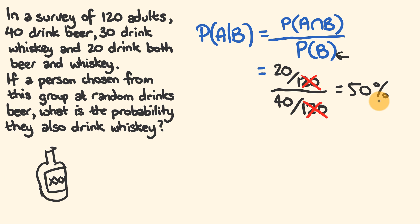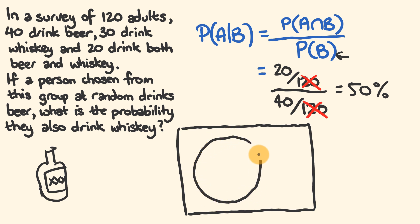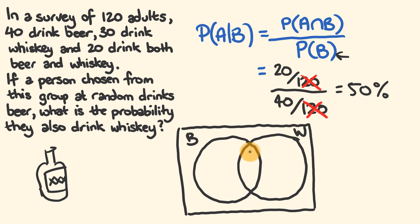Now we can go through and use a Venn diagram to really see what's going on. We draw a rectangle to represent our entire survey of 120 adults. There are two circles: one representing people who drink beer, one representing people who drink whiskey, and an intersection for the people who drink both beer and whiskey.